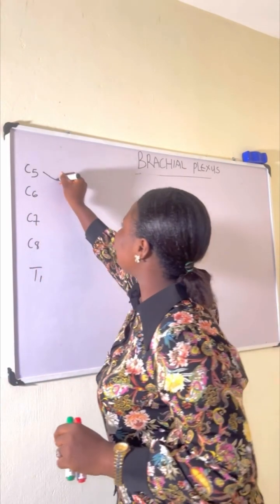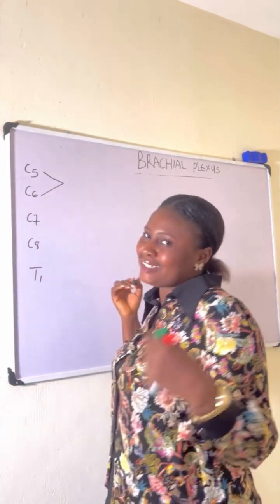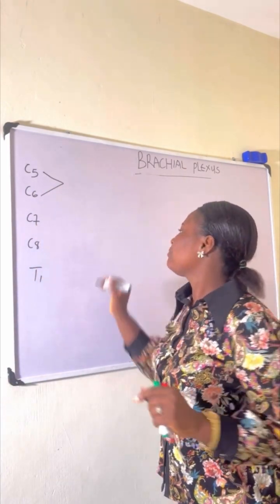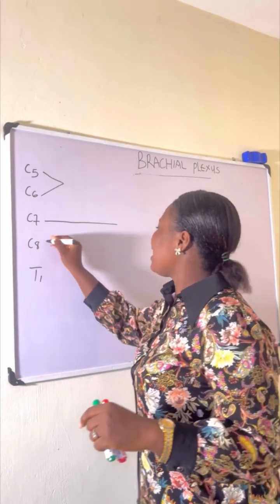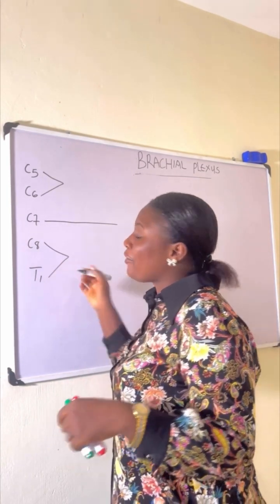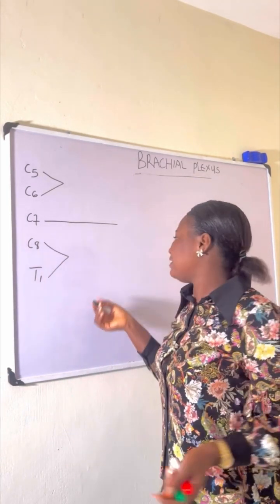C5 and C6 are going to get married. C7 will not get married. C8 and C1 are going to get married.